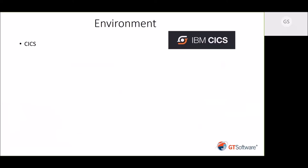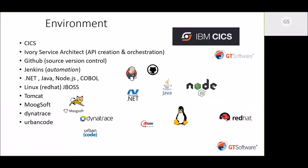In previous environments, to move something to production you needed a CICS person, an application person, maybe a DB2 or IMS DBA, all to agree on timing. That's changing. Now you have more than just mainframe people involved to integrate a CICS application — you need GitHub for source control, Jenkins automation, Linux, JBoss, WebSphere, Moogsoft for distributed dashboard, Dynatrace for distributed tracing, and UrbanCode for their DevOps solution. In today's world, you need a larger variety of experts instead of just a few CICS app people to move your application forward.